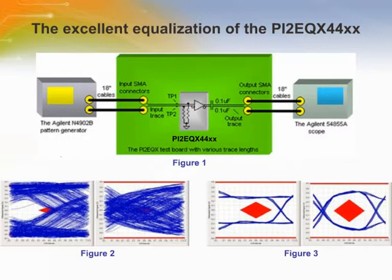Figure 1 shows the configuration of the PI2-EQX4401 and 02 test board, which has a variety of trace lengths from 1.9 inches to 40 inches at input and output for signal integrity testing. The Agilent N4902B acts as a signal source to provide the high-speed differential signal. Figure 2 shows the messy input eyes measured at TP1 and TP2; however, the signals are recovered at the output of the PI2-EQX4401 and 02 because of the 7.5 dB equalization at the input.